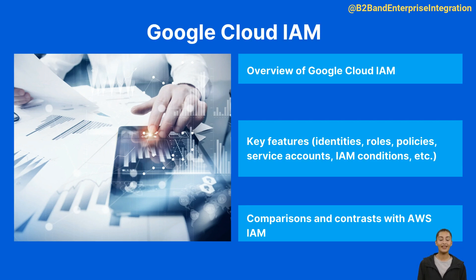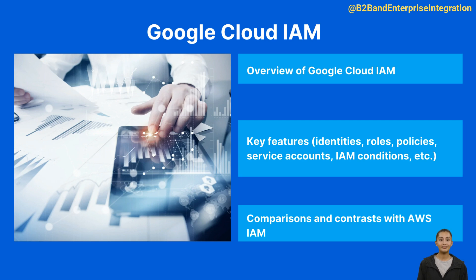Google Cloud Platform, GCP, provides a similar service to AWS IAM known as Google Cloud Identity and Access Management, IAM. It allows administrators to manage access control by defining who — the identity — has what access — the role — for which resource. Below are some key features of Google Cloud IAM.